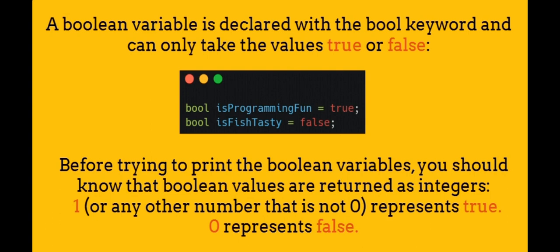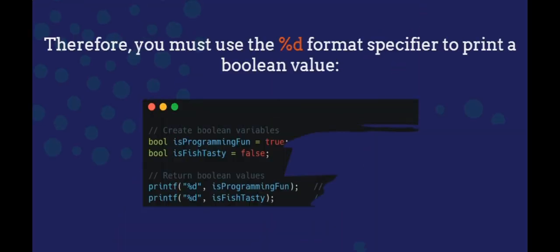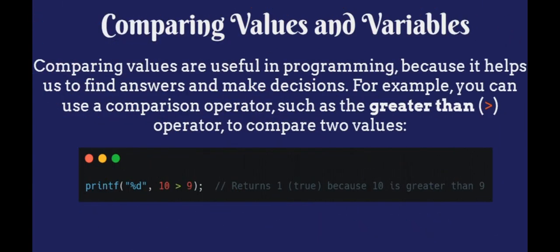A boolean variable is declared with the bool keyword and can only take the values true or false. Before trying to print the boolean variables, you should know that boolean values are returned as integers. 1, or any other number that is not 0, represents true. 0 represents false. Therefore, you must use the %d format specifier to print a boolean value.